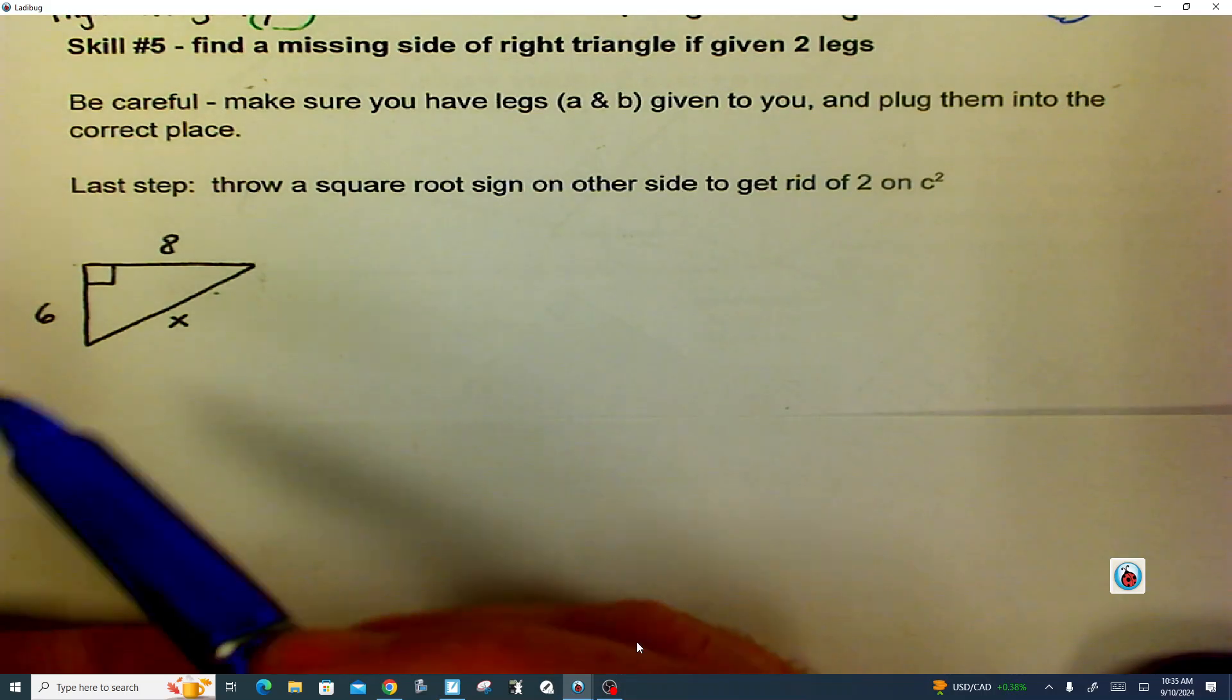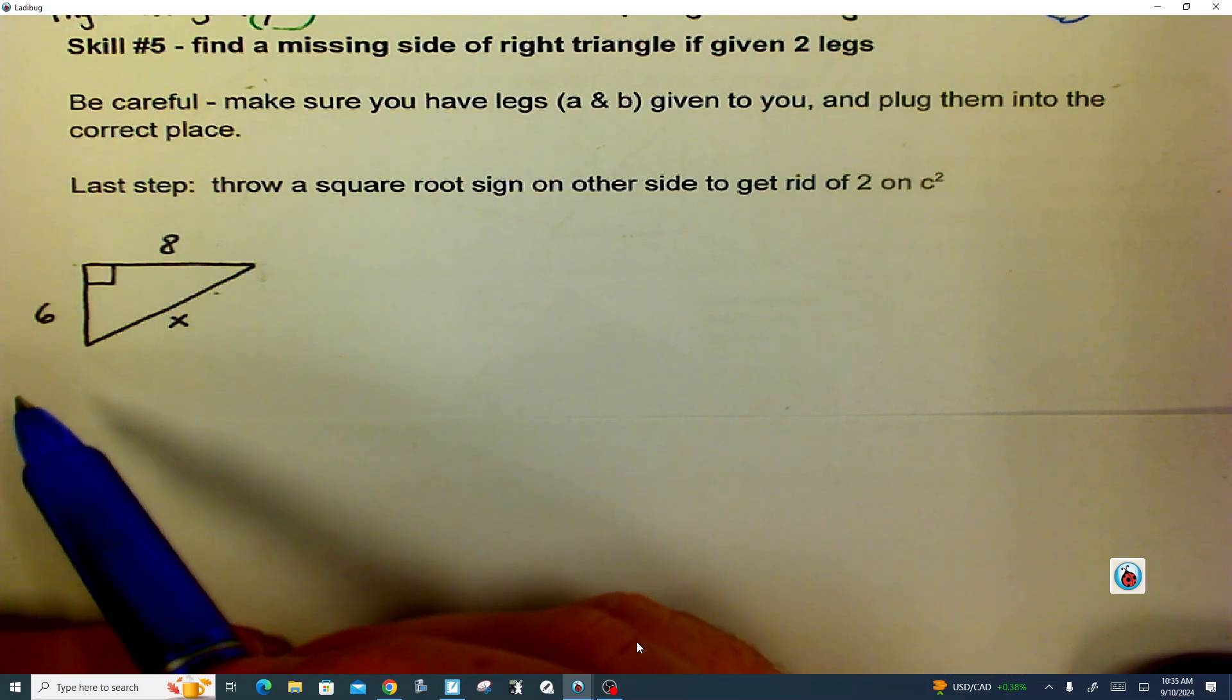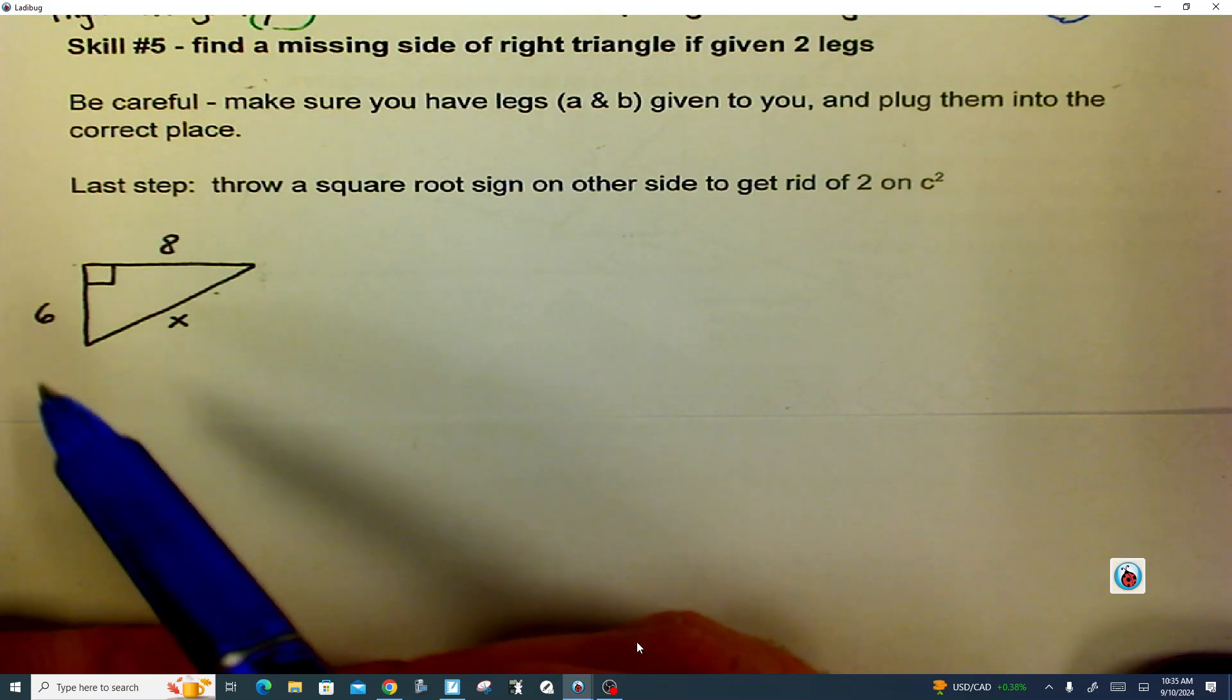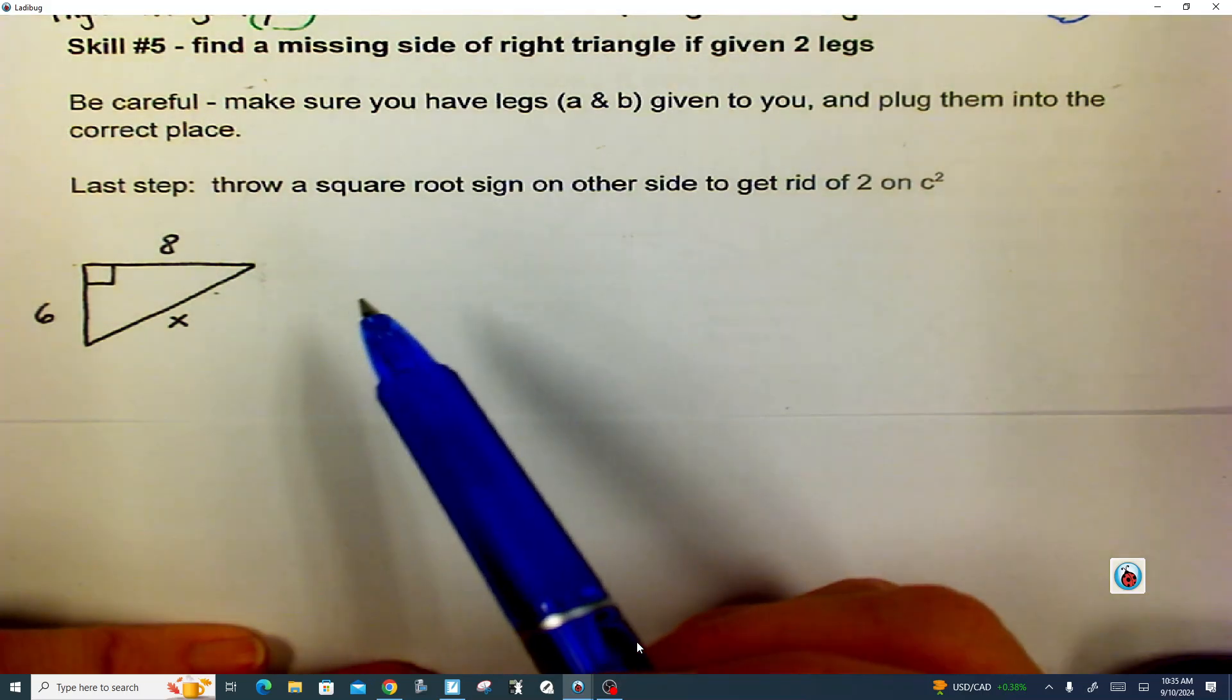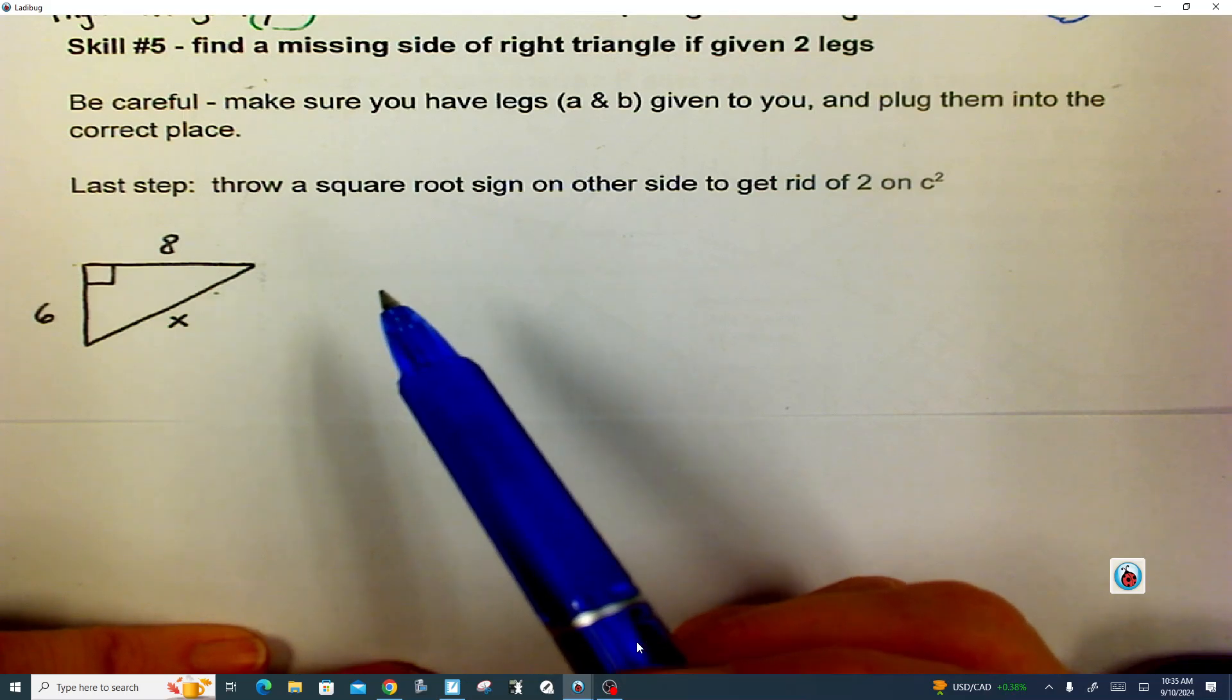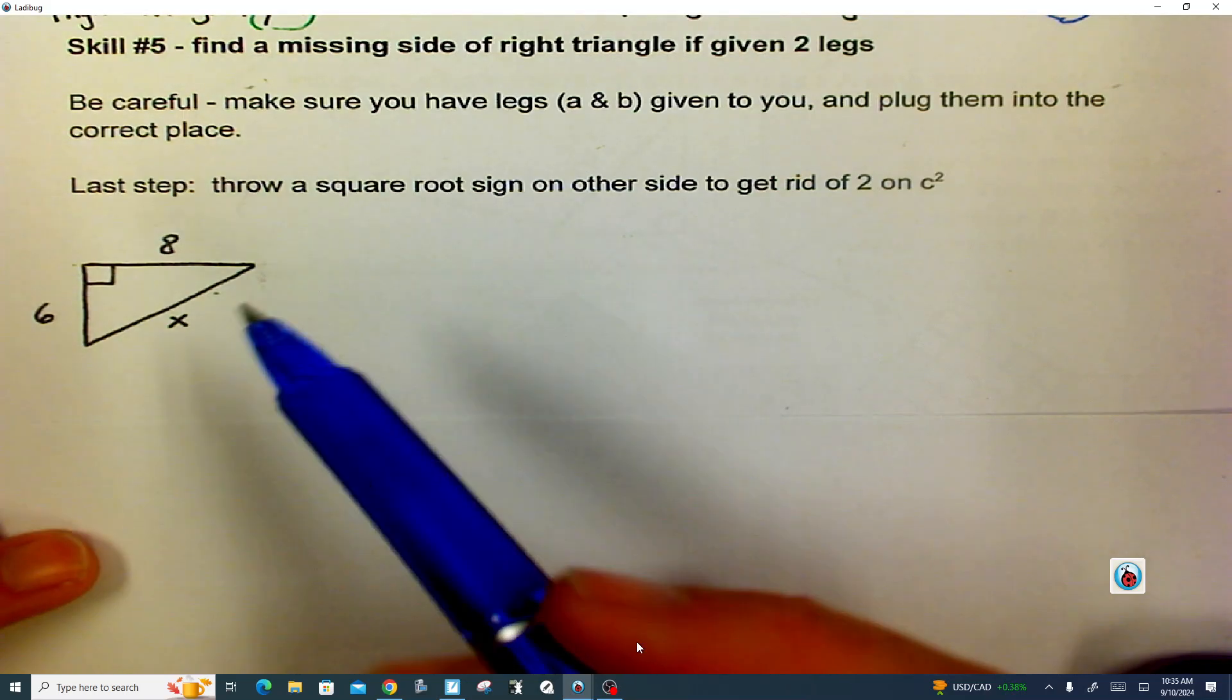Now you still need all your underlying skills. You need to know A, B, and C side of a triangle, and you need to know what the Pythagorean theorem is to take those sides of a triangle and plug them into the Pythagorean theorem. So if you need those, go back and look at the previous skills.